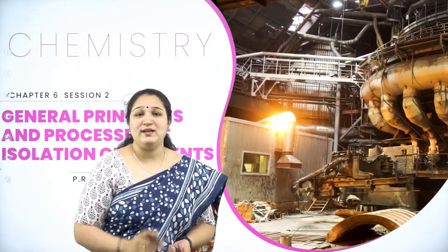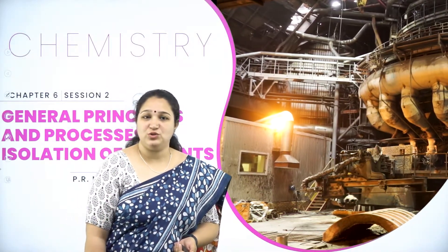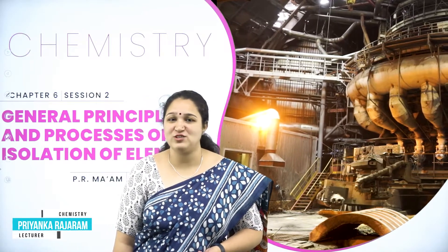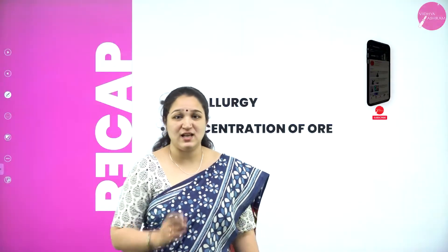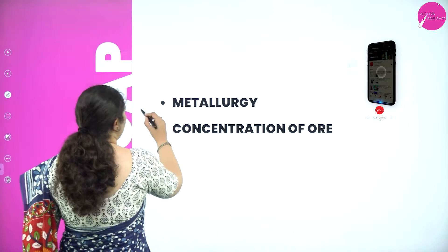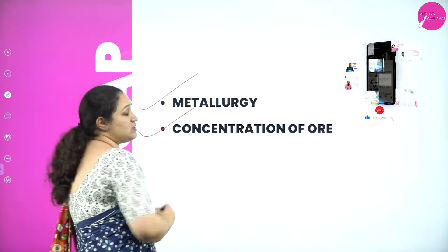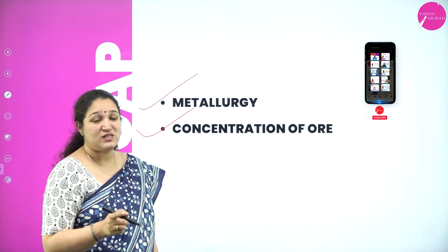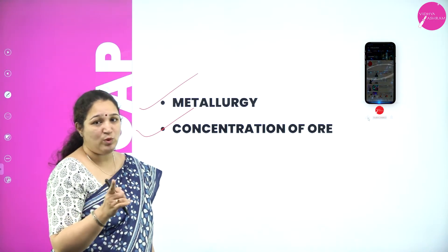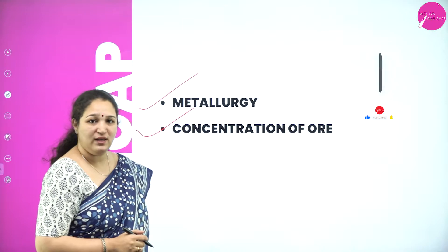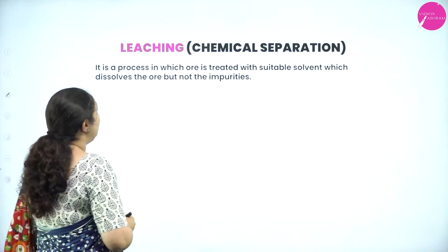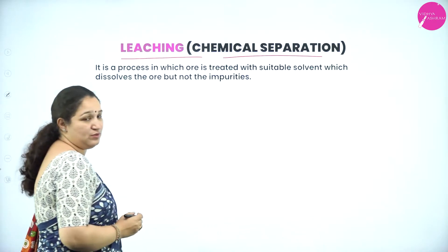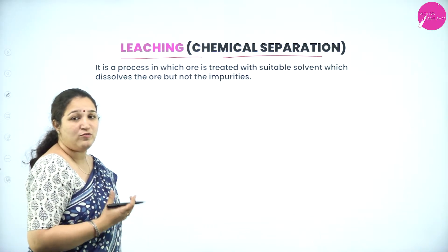Hello my dear students, welcome back to session 2 on the chapter General Principles and Processes of Isolation of Elements. Last class we studied about metallurgy and the concentration of the ore. Under concentration of the ore, we studied 3 methods. There is one more method left that we are going to study today, and that method is leaching, or the chemical separation of the ore from its gangue.